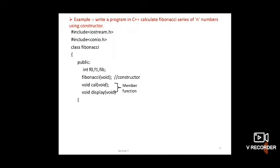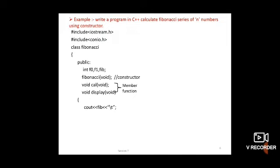Write the display function inside the class. Inside its body: cout << fib << '\t'. The fib variable stores the addition of f0 and f1. The \t is for tab spacing between numbers. End of display function and end of the class with a semicolon.